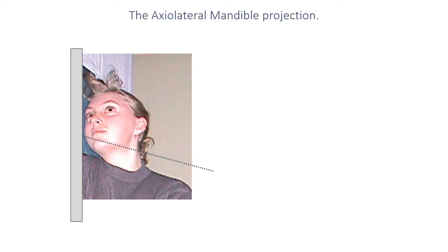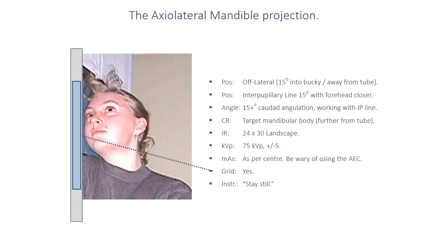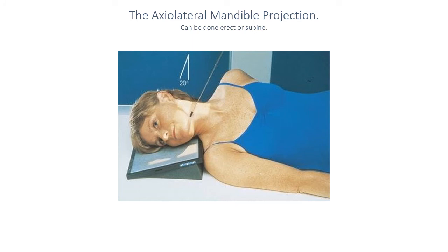If you're able to achieve that positioning, you should end up with the patient's head not in a true lateral position but 15 degrees turned into the erect or table bucky, and also angulated such that the forehead is closer to the film — the interpupillary line will be on a 15-degree angle. The centering point is in the target mandibular body, with the central ray passing essentially just anterior to the mandibular angle, at the midpoint between the two mandibular angles. It can be done erect or supine.